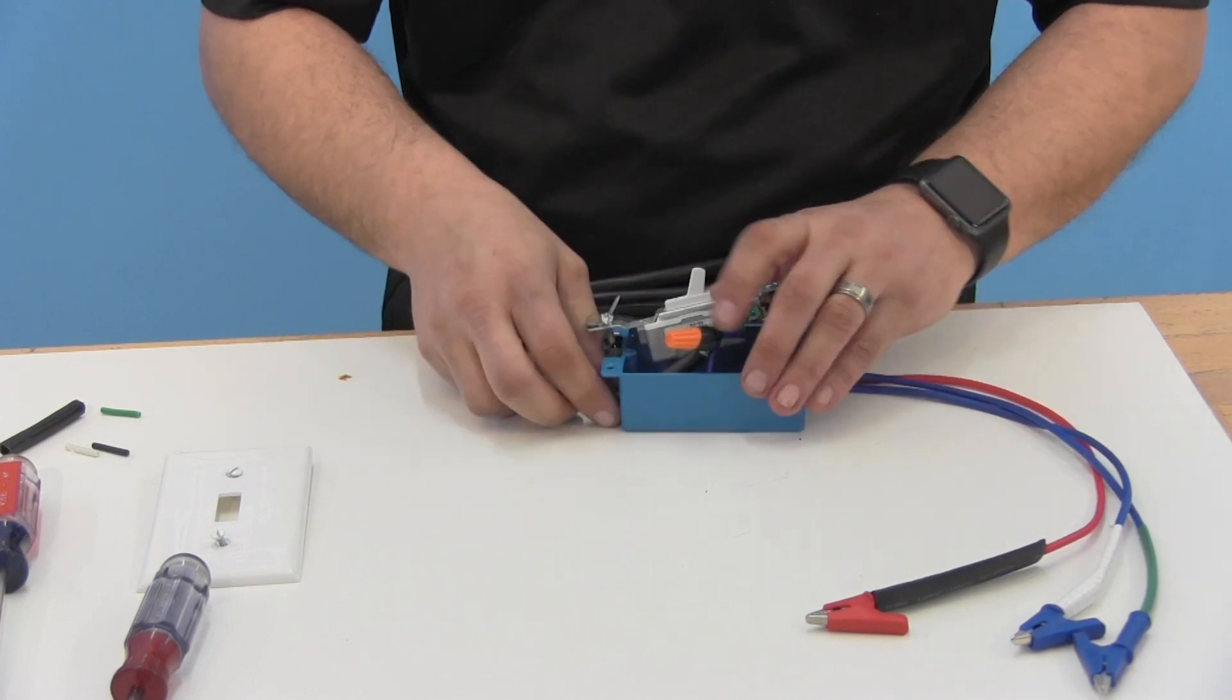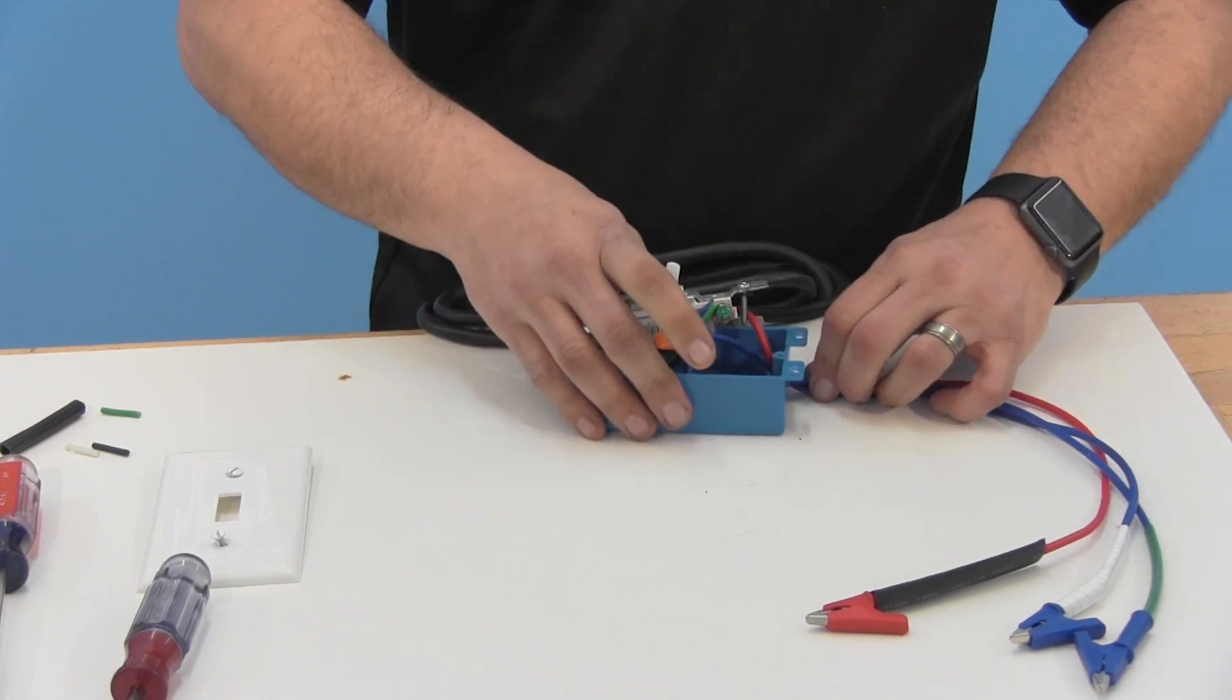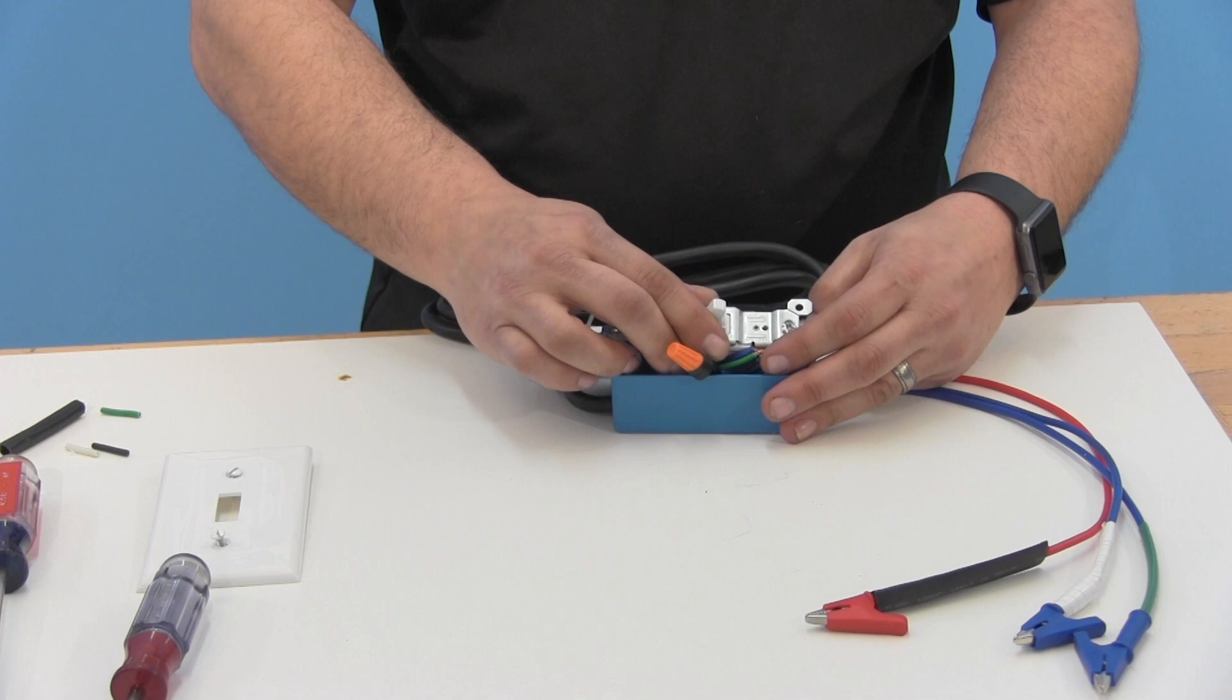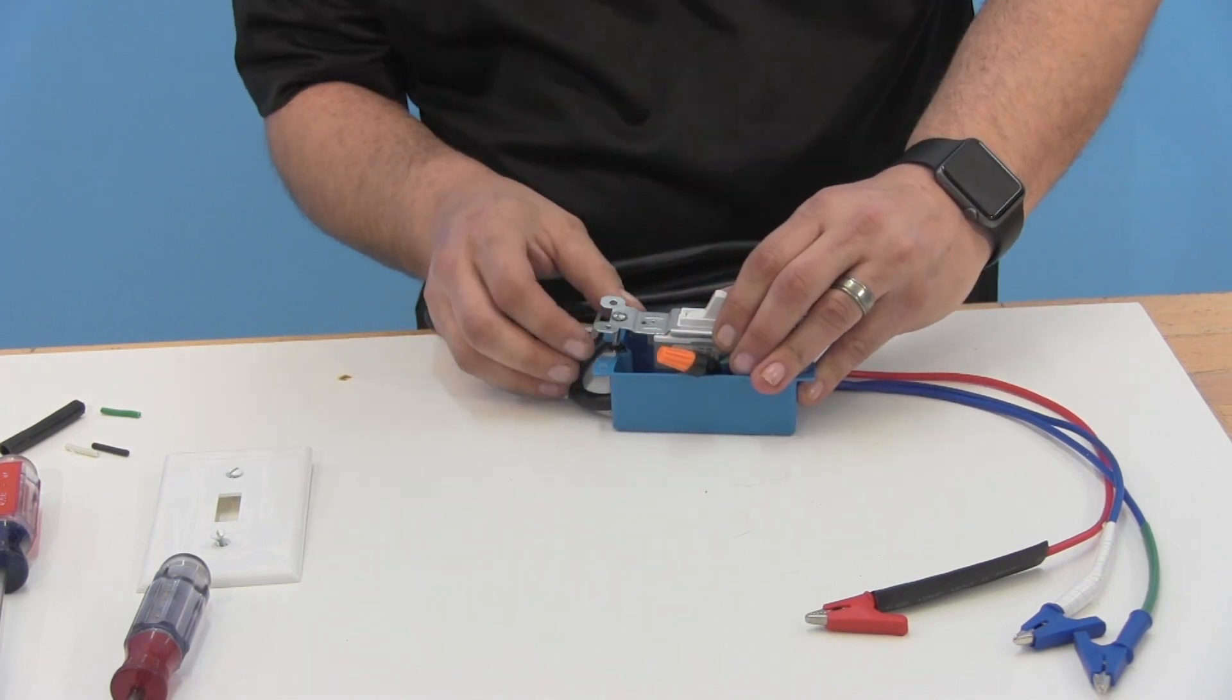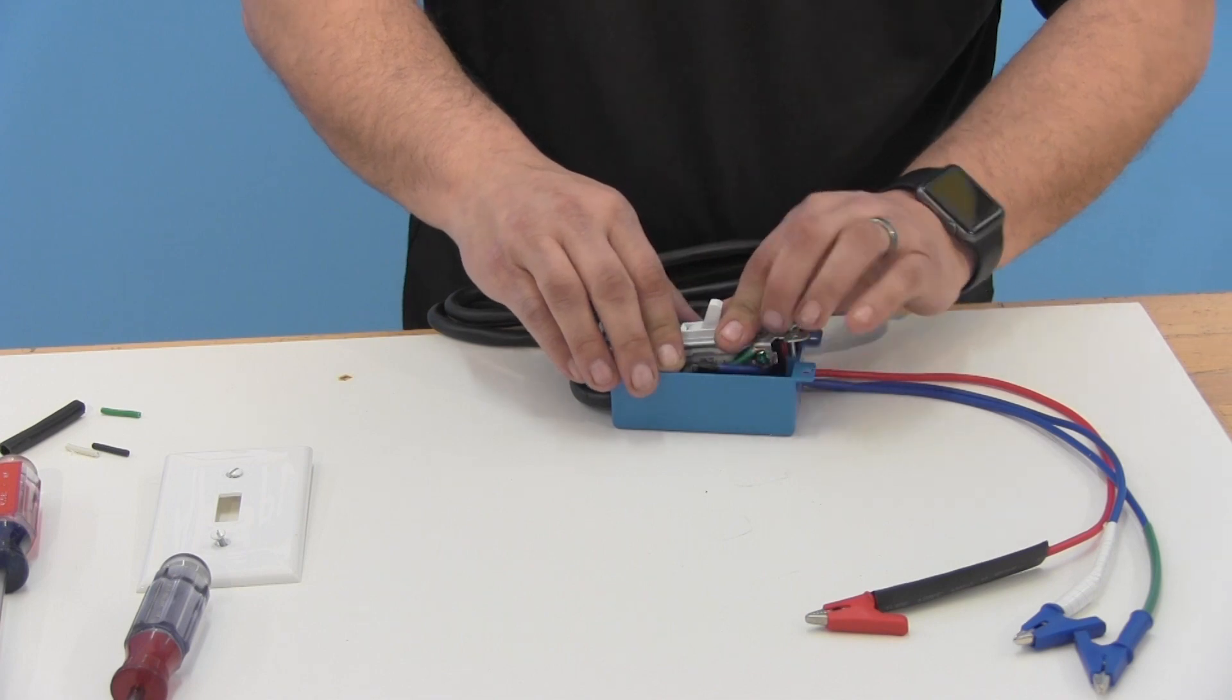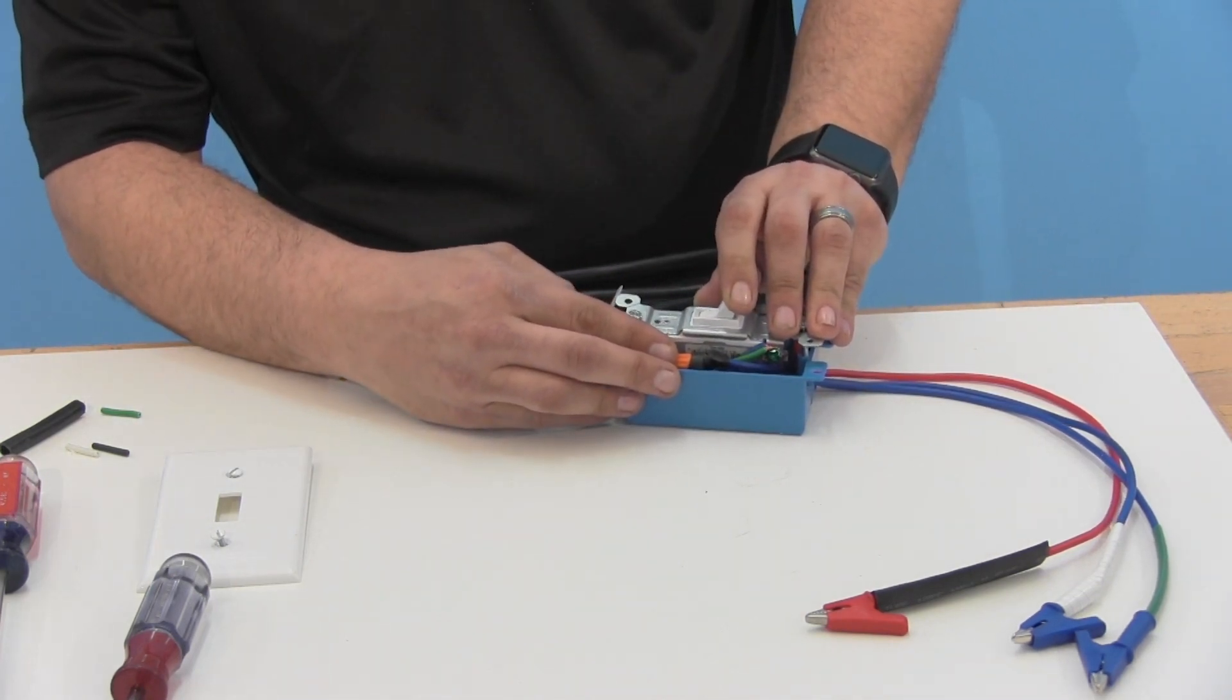If you have to adjust your wiring, feel free to do so. Go ahead and take your switch, line them up with the holes that are on the switch box there, and then make sure the wire nut is off to the side. You don't want to squeeze that wire nut with the switch itself.